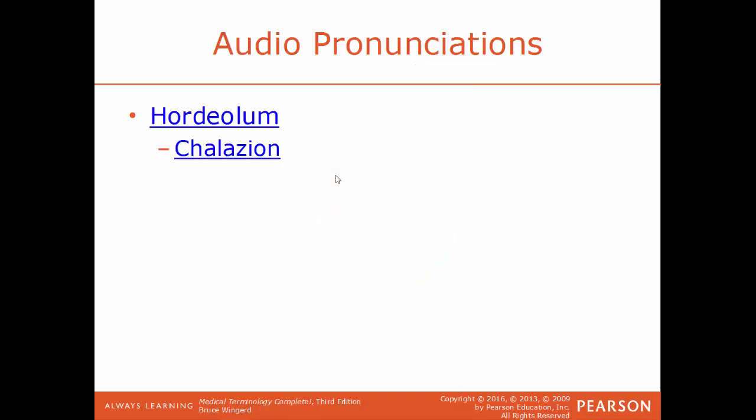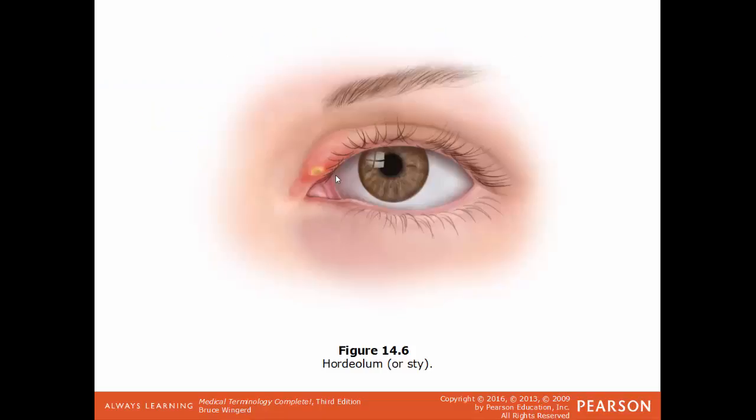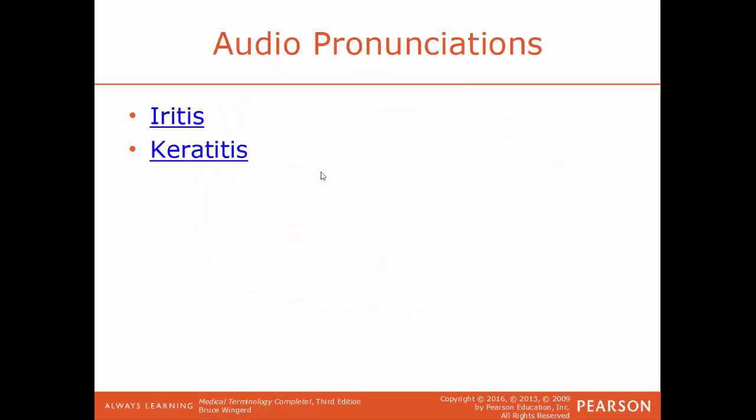Hordeolum is another word for a stye — a localized infection of an eyelid, usually involving an eyelash. It could also be called chalazion; both are a reference to a stye — basically an infected eyelash. Iritis is an inflammation of the iris, the colored part of the eye. Keratitis is the inflammation of the cornea, the outermost bulging part of the eye.